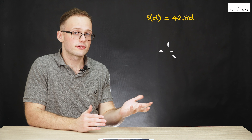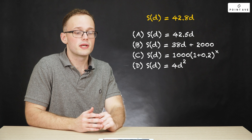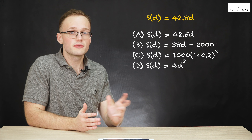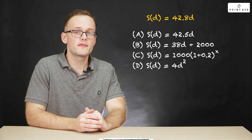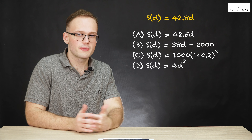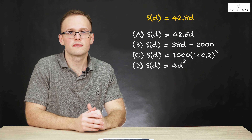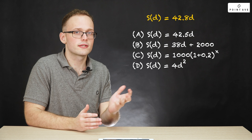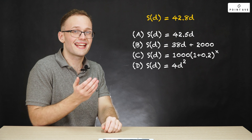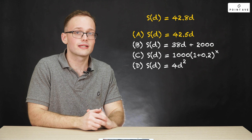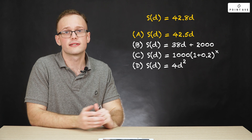Comparing with our answer choices, we don't have anything that matches exactly since we've been approximating, so anything pretty close is good enough. Looking through the answer choices, we see that A is pretty close to what we found, and that's our final answer.